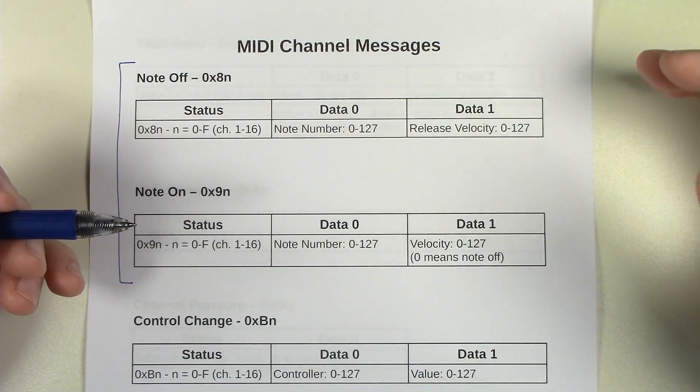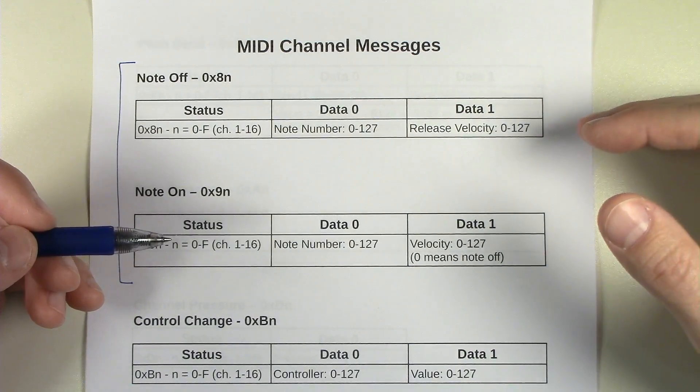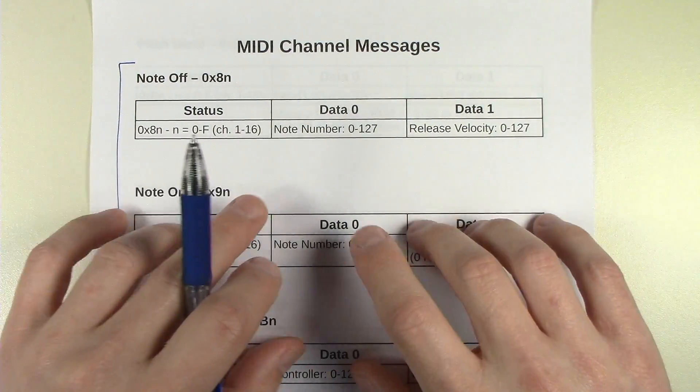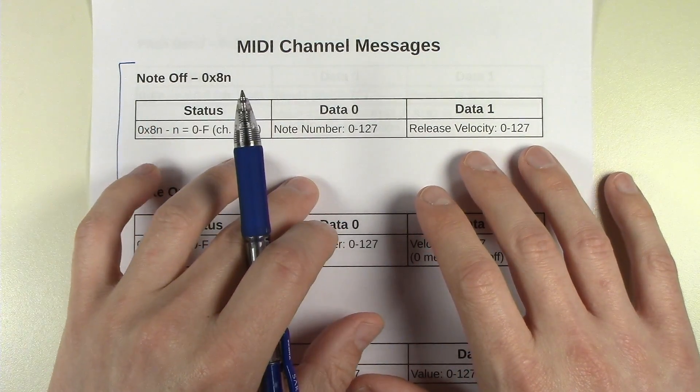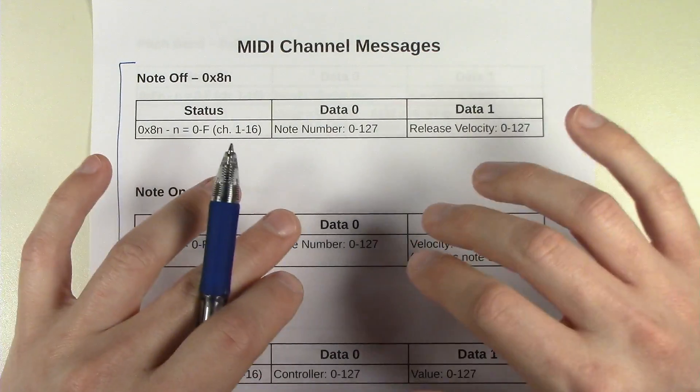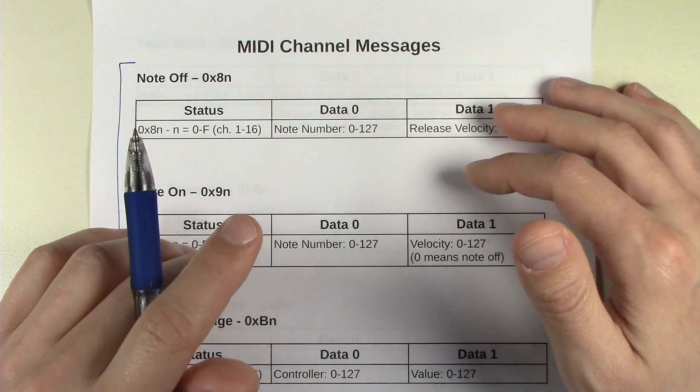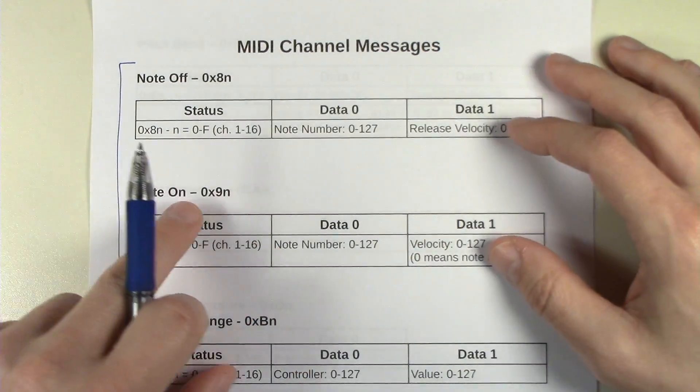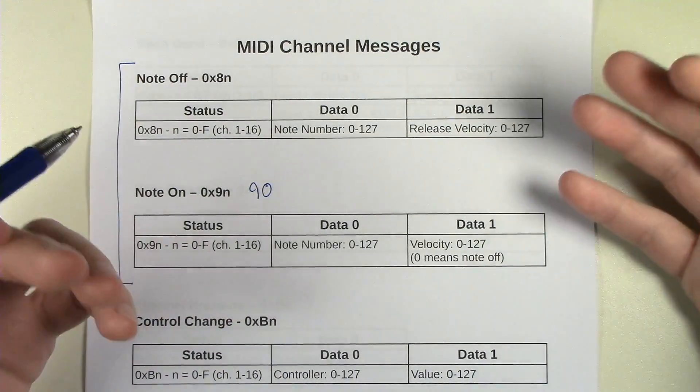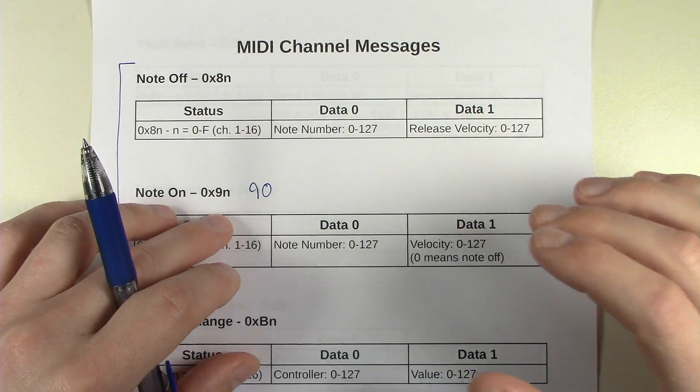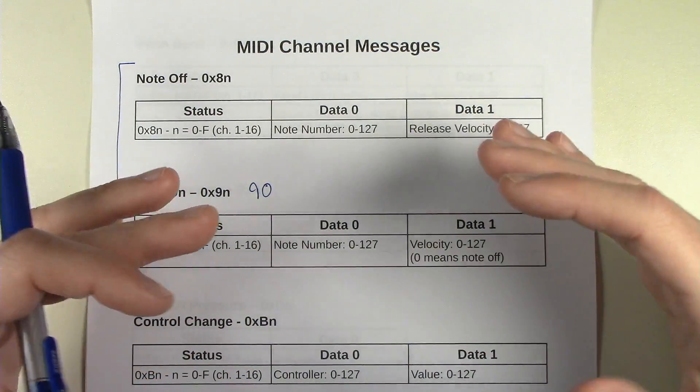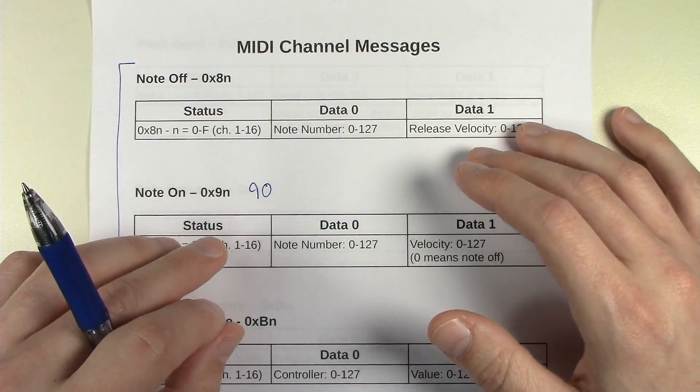Because we talked about running status in the previous episode, because of running status and the fact that it affords us this form of compression, Note On is often used as the only note message and Note Off is just ignored. Because if you're sending note ons and you can send note ons and offs using the same status byte, then you never have to clear the running status. And there's another reason too, is because release velocity would be sort of like how fast I'm letting go of the note. And although that seems like a good idea, Note Off supports release velocity, and I guess we could detect how fast we're letting off the key, but most instruments don't really do anything with that.